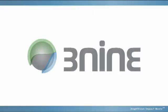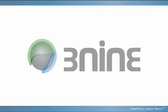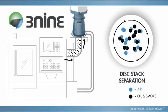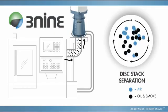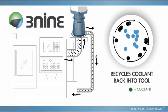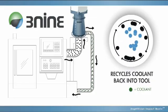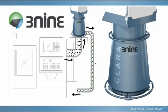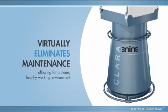But all of that has changed with the introduction of 3.9 Oil Mist Separation Technology. Instead of simply capturing particles like filters do, 3.9's patented technology uses centrifugal separation to remove all oil and smoke particles from the air inside the cabin and recycle coolant back into the machine, virtually eliminating maintenance and allowing for a clean, healthy working environment.